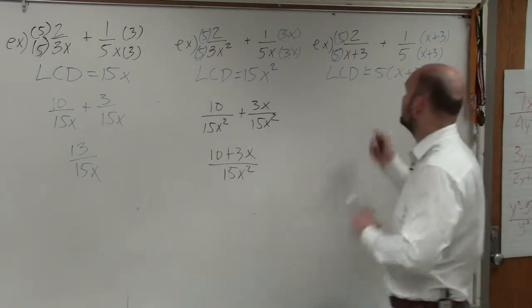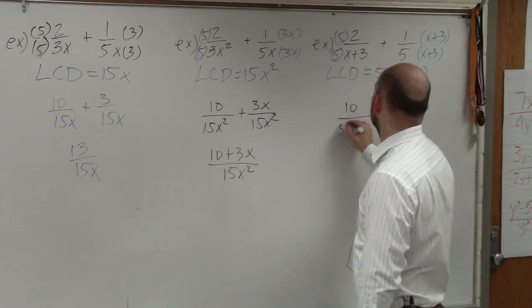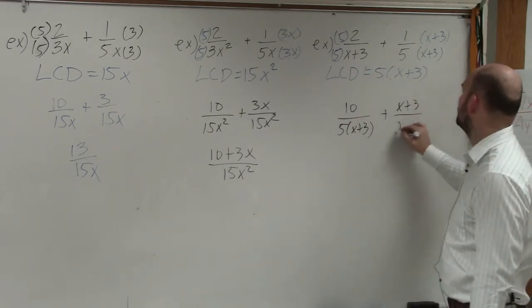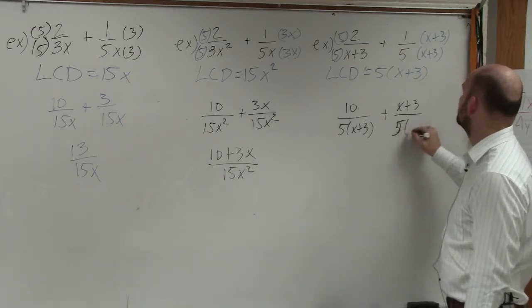you multiply what's going to give you those two. So therefore, when doing that, I obtain 10 over 5(x+3) plus (x+3) over 5(x+3).